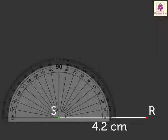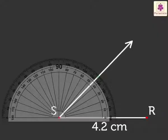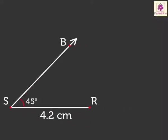Step 2. Construct Angle BSR of 45 degrees using a protractor.